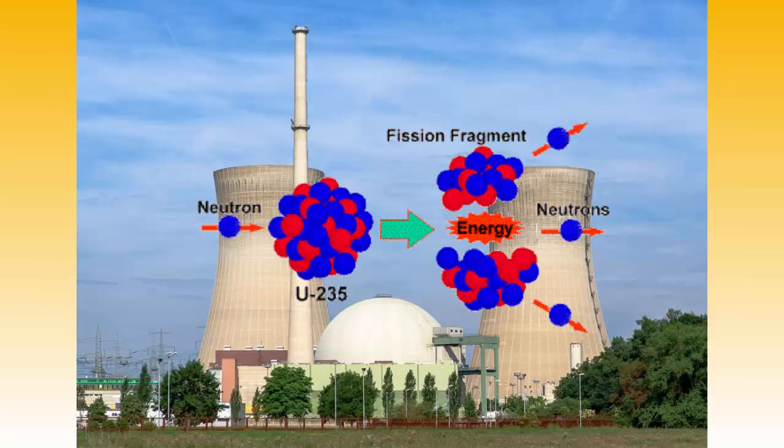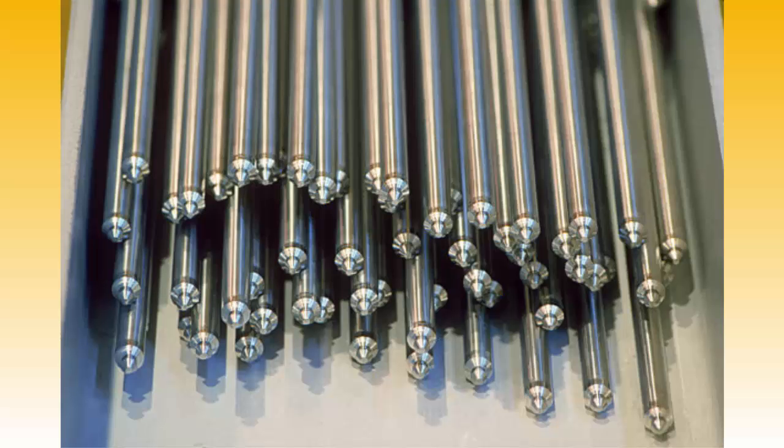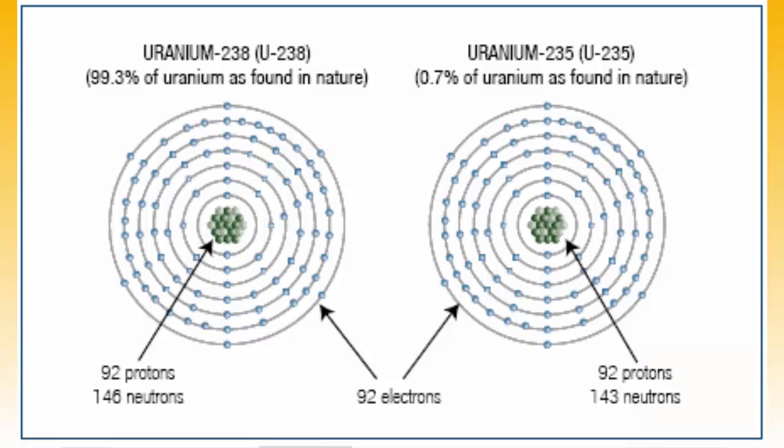A nuclear reactor uses uranium-235 to generate energy. In order to do so, it has a number of rods, called fuel rods, that contain a mixture of uranium-235 and 238.